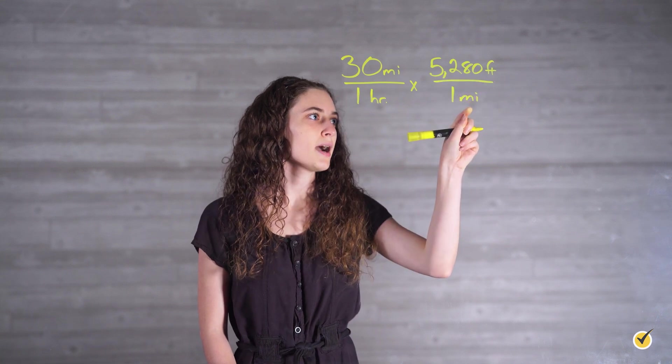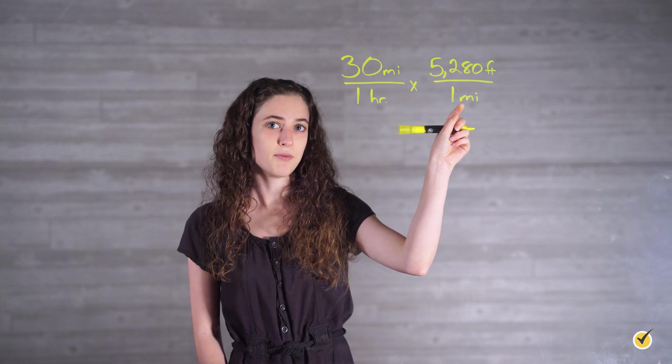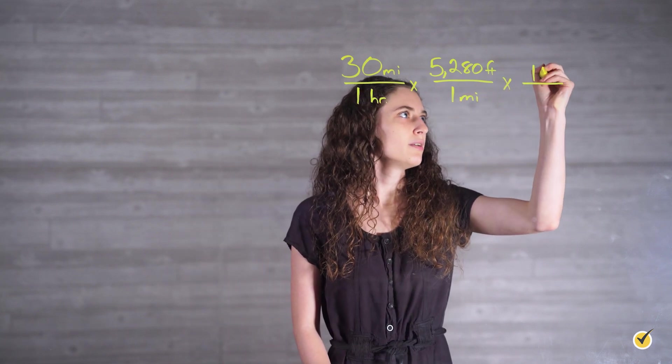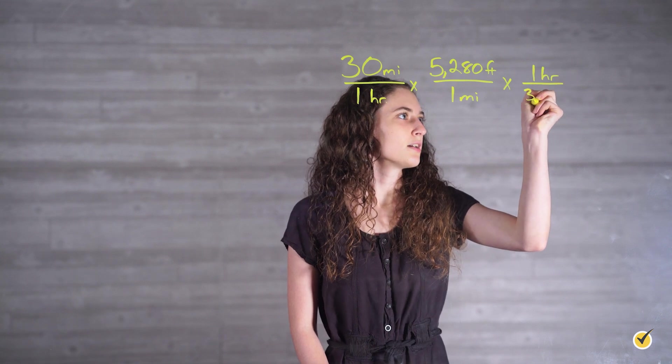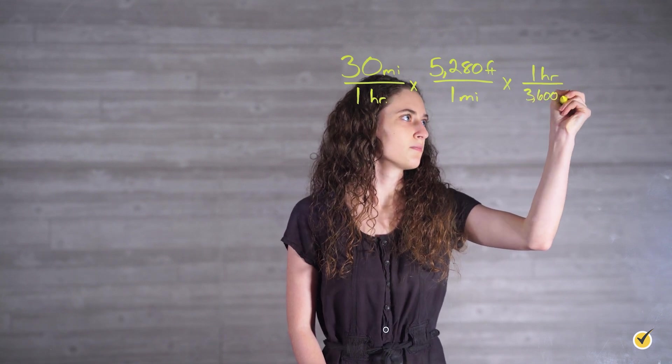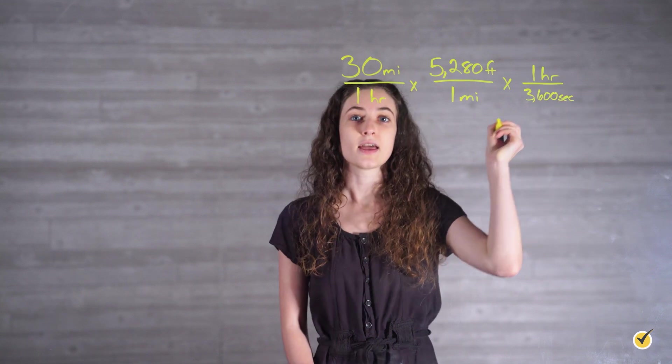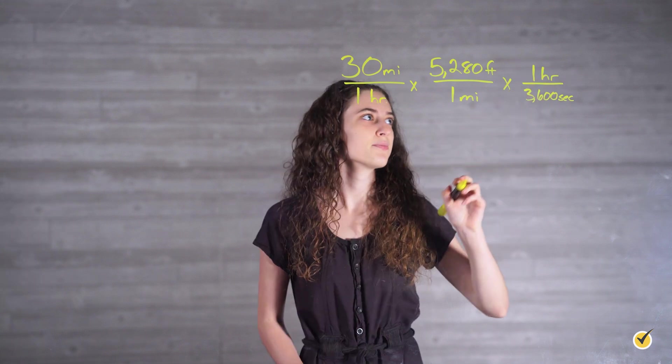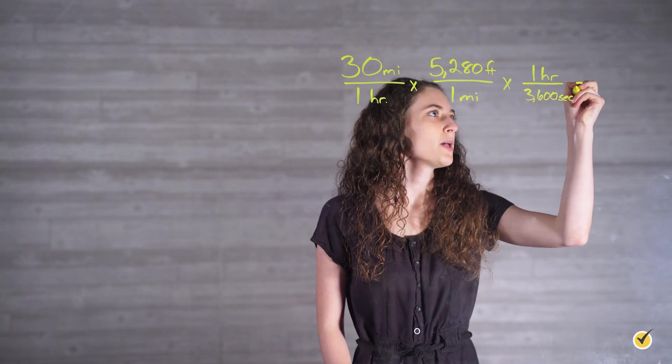There are 5,280 feet in one mile. And we want to put the mile on bottom because we want our units to cancel out. And in one hour, there are 3,600 seconds. Again, we have our hour on top over here because we have it on bottom over here, and we want them to cancel out.